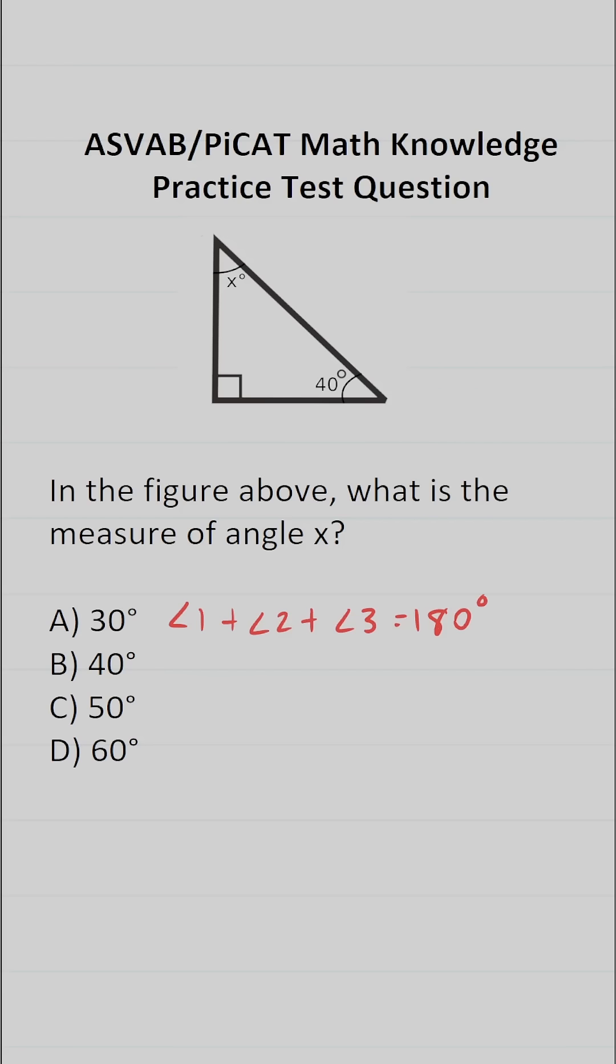Now, in this case, we know that we have a right triangle. This symbol right here means that that is a right angle. So we know this angle is 90 degrees. I'm going to let the measure of angle 1 be 90 degrees.